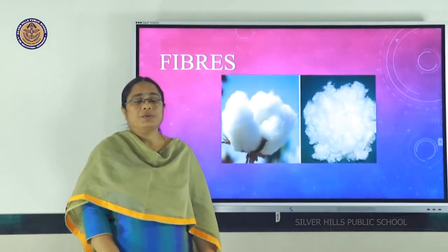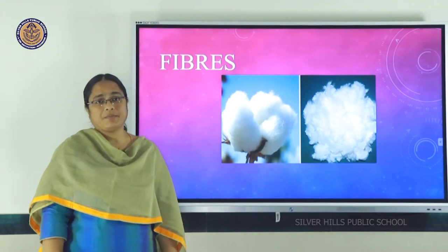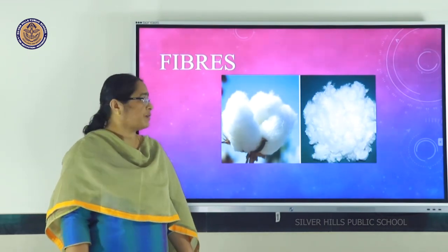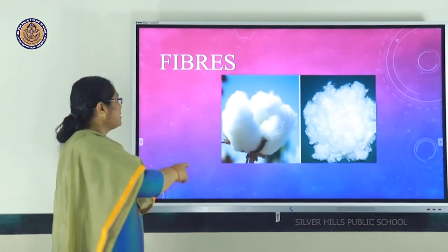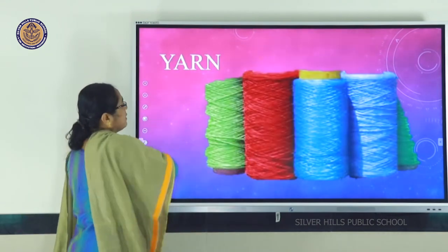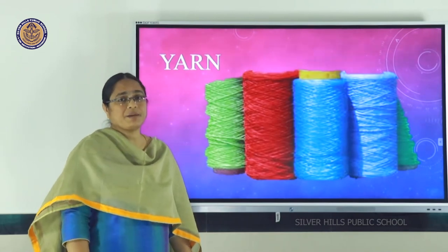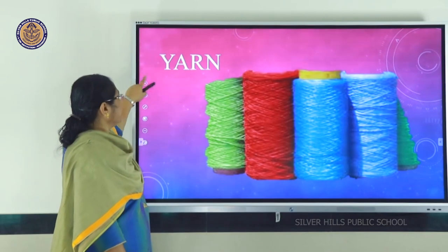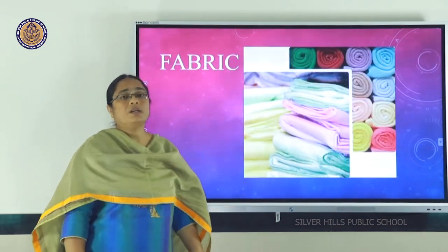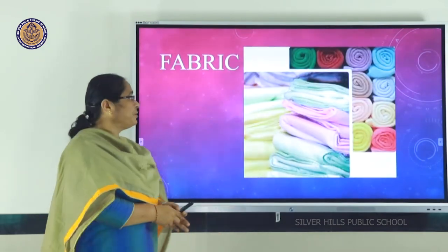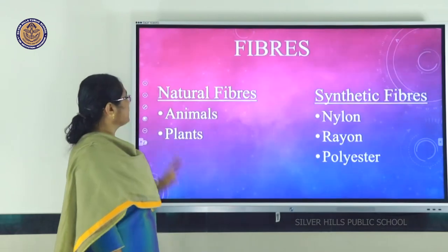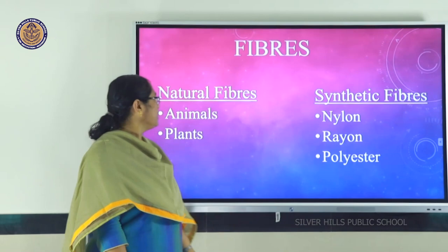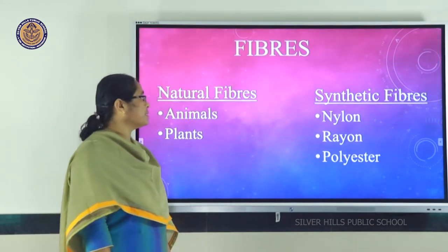Now we are going to discuss about fibers. The origin of clothes comes from fibers. Fibers are hair-like thin strands, and yarn is made from fibers. Fibers are twisted and made into yarn, and this yarn is weaved and made into fabrics. There are two types of fibers: natural fibers and artificial fibers.